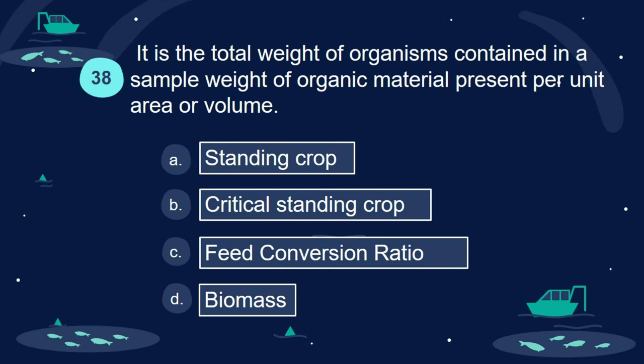Question 38. It is the total weight of organisms contained in a sample — weight of organic material present per unit area or volume: A. Standing crop. B. Critical standing crop. C. Feed conversion ratio. D. Biomass.